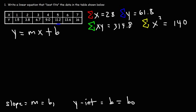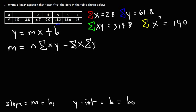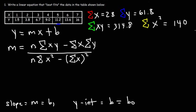The slope formula is: m = [n·Σ(xy) − Σx·Σy] / [n·Σx² − (Σx)²]. Here, n is the number of data values. We have 7 points, so n = 7.